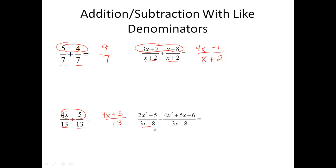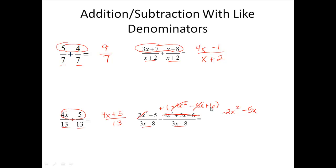The last one for this slide: I've got the exact same denominators, but now there's a minus sign. When you have a minus sign, change it to a plus and then take the opposite of everything in the back. So I'm going to do it as plus negative 4x squared, negative 5x, and a positive 6. Now I've got 2x squared and negative 4x squared, giving me negative 2x squared. The negative 5x stays. Then 5 and 6 gives me 11. The denominator stays as 3x minus 8 — we never add denominators.